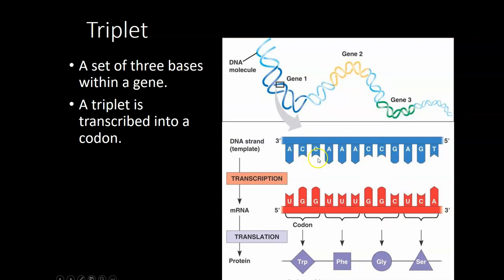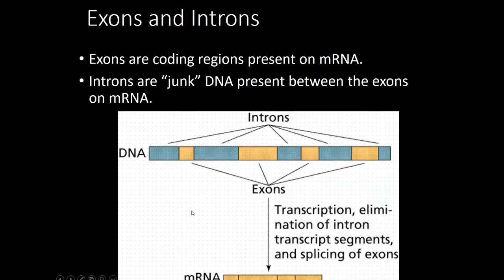DNA is written as a series of three letters. A set of three letters on DNA is called a triplet — so ACC would be a triplet, AAA would be a triplet. Triplets get transcribed into codons on mRNA. Those same three letters, when we do the complementary base pairing onto RNA, are called codons — so UGG is a codon, UUU is a codon. It's called a codon because it codes for a specific amino acid. When looking up the genetic code, you have to look up the mRNA codon, not the DNA — that's how the box is written.